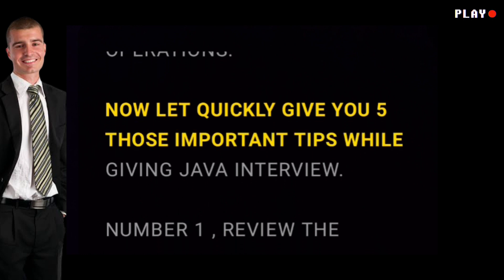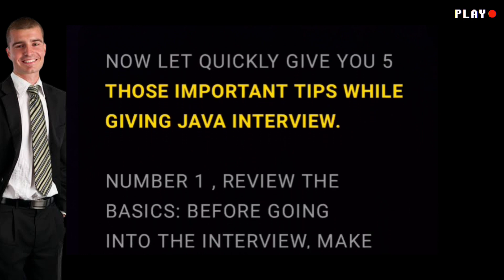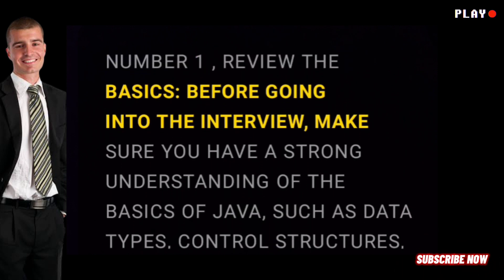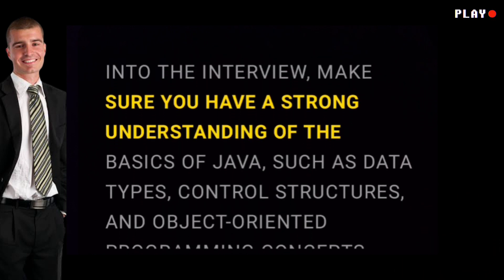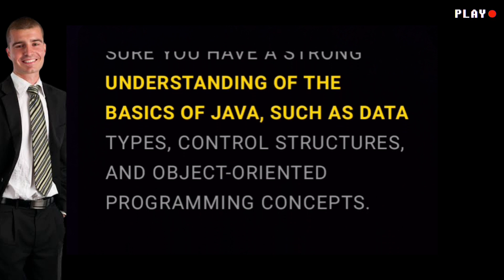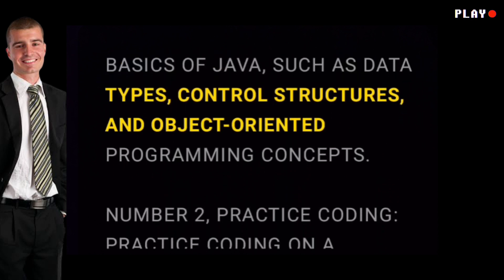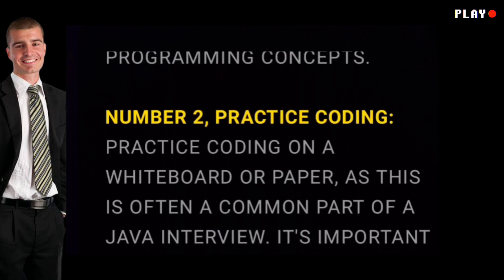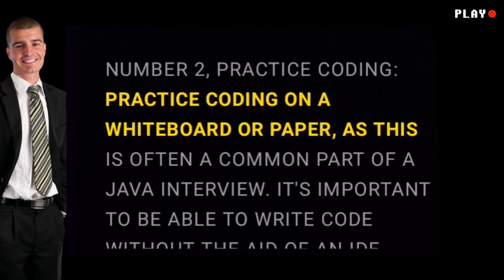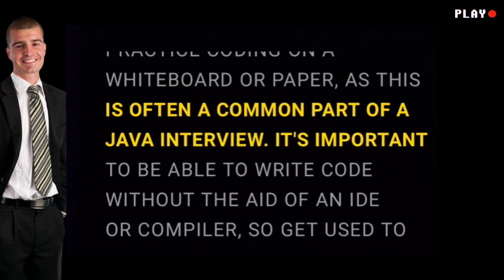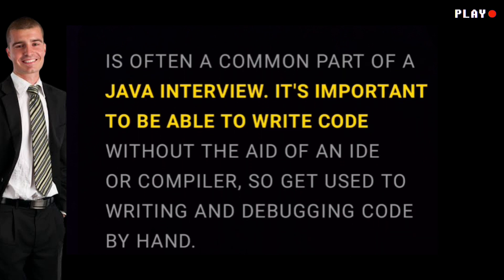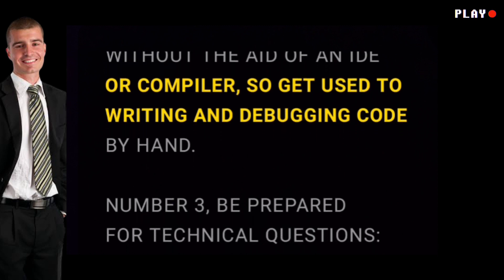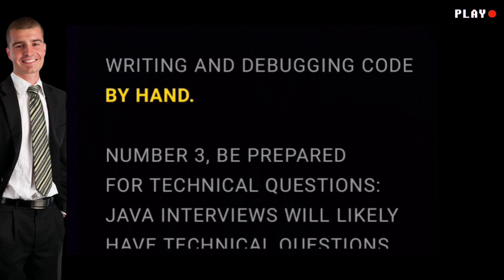Now let me quickly give you five important tips while giving a Java interview. Number one: review the basics. Before going into the interview, make sure you have a strong understanding of the basics of Java, such as data types, control structures, and object-oriented programming concepts. Number two: practice coding. Practice coding on a whiteboard or paper, as this is often a common part of a Java interview. It's important to be able to write code without the aid of an IDE or compiler, so get used to writing and debugging code by hand.